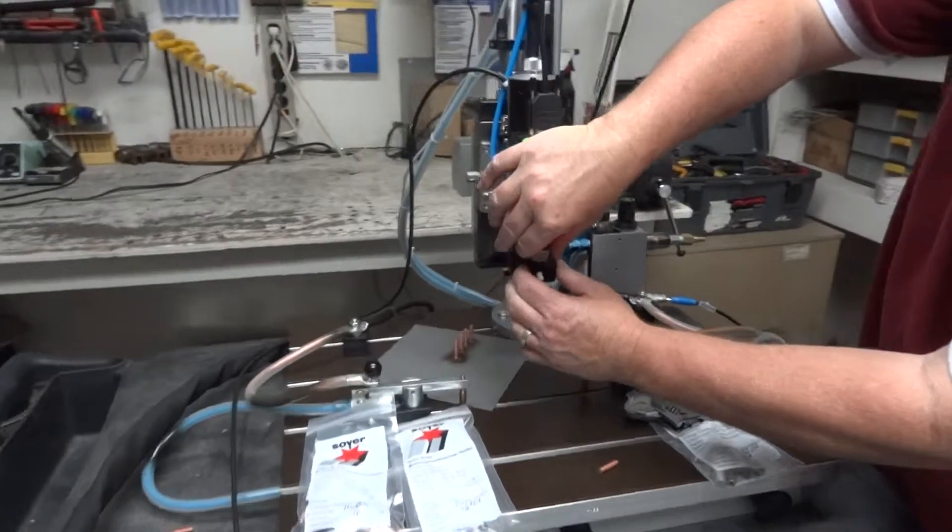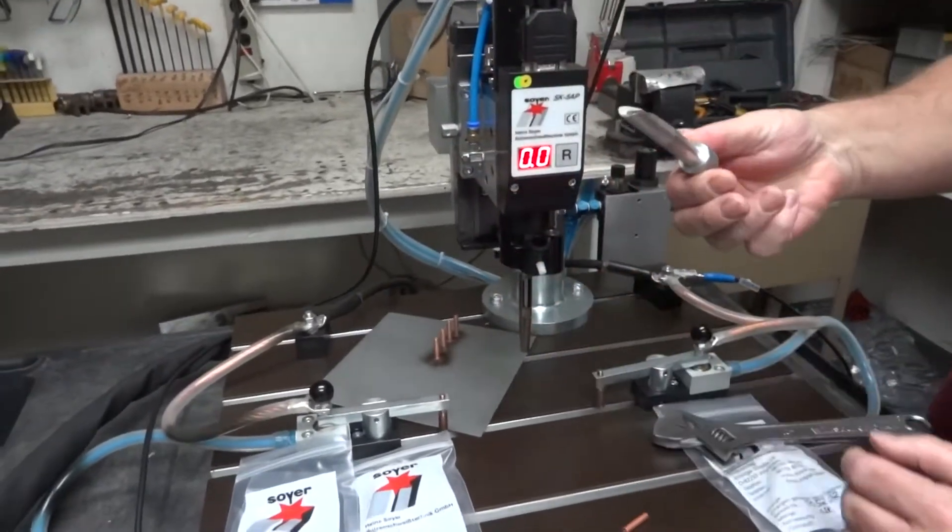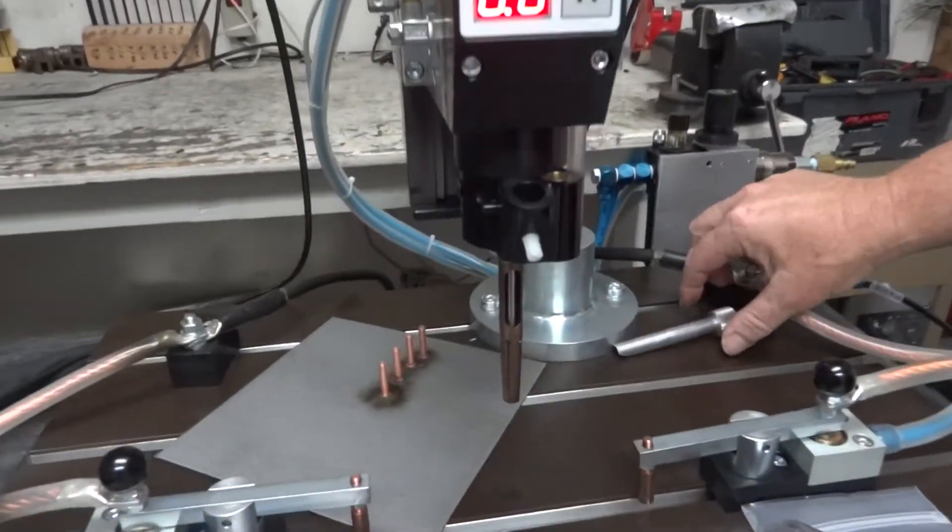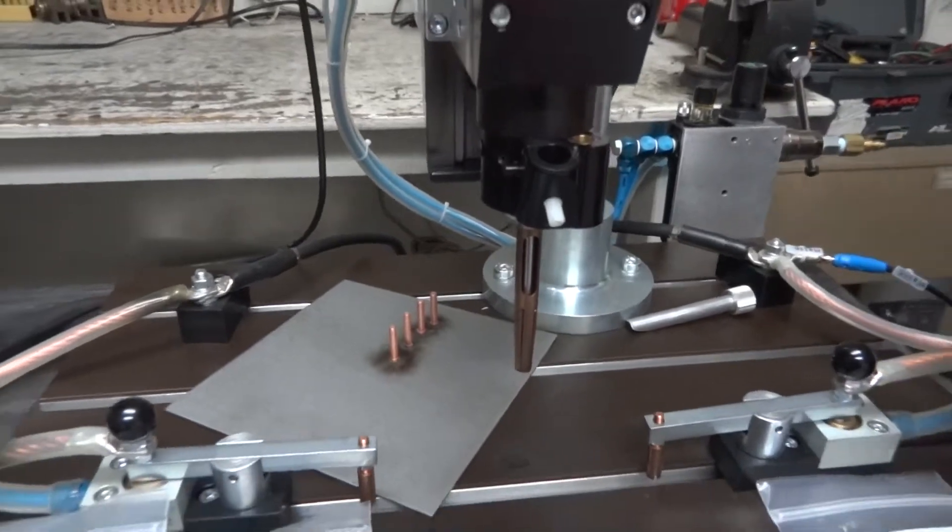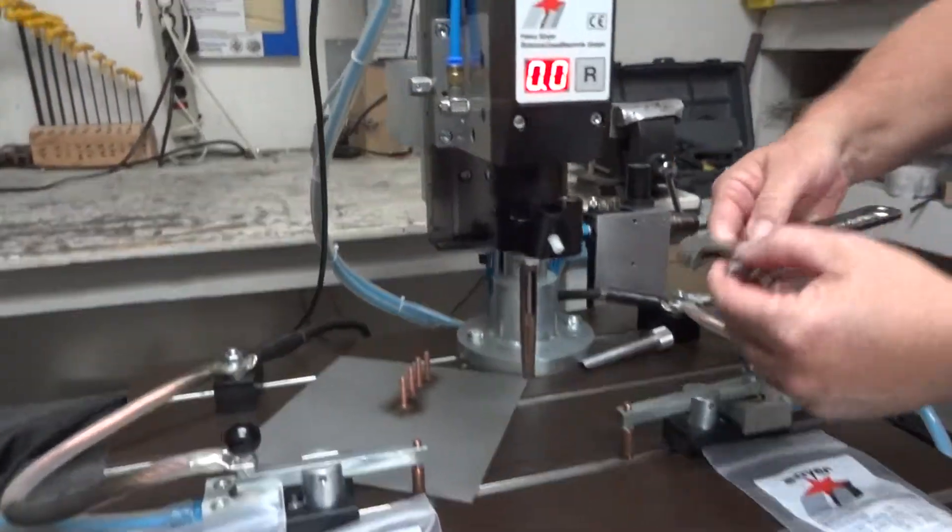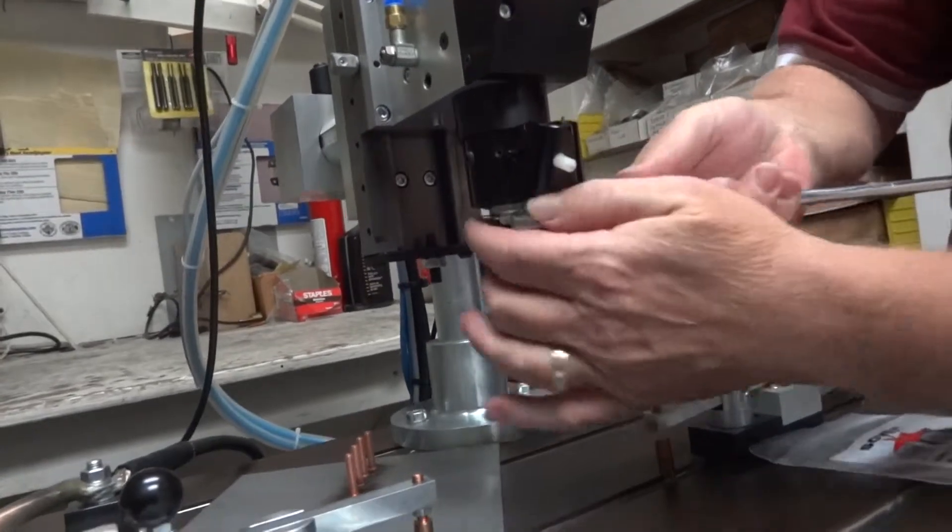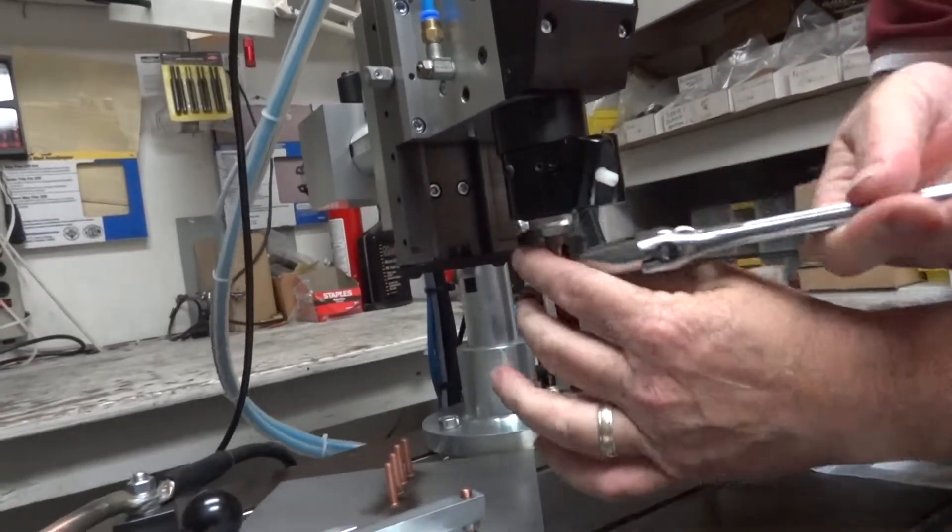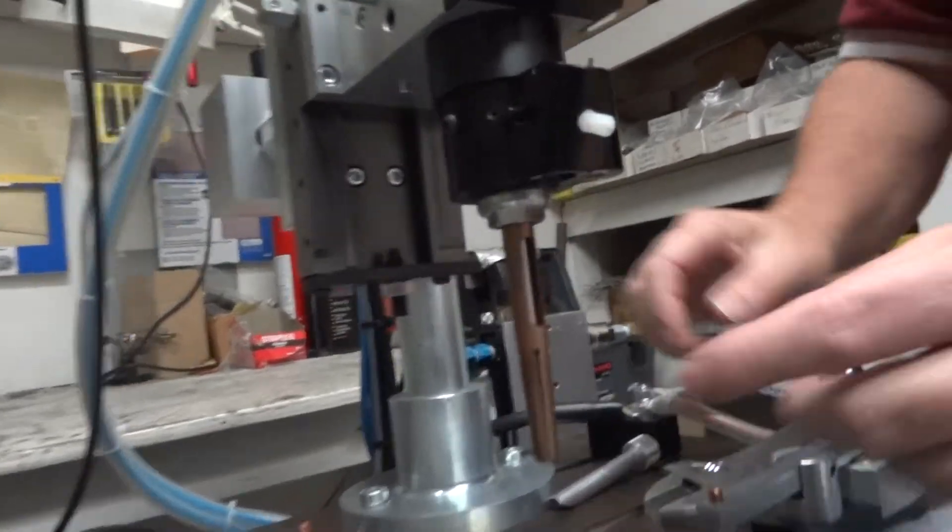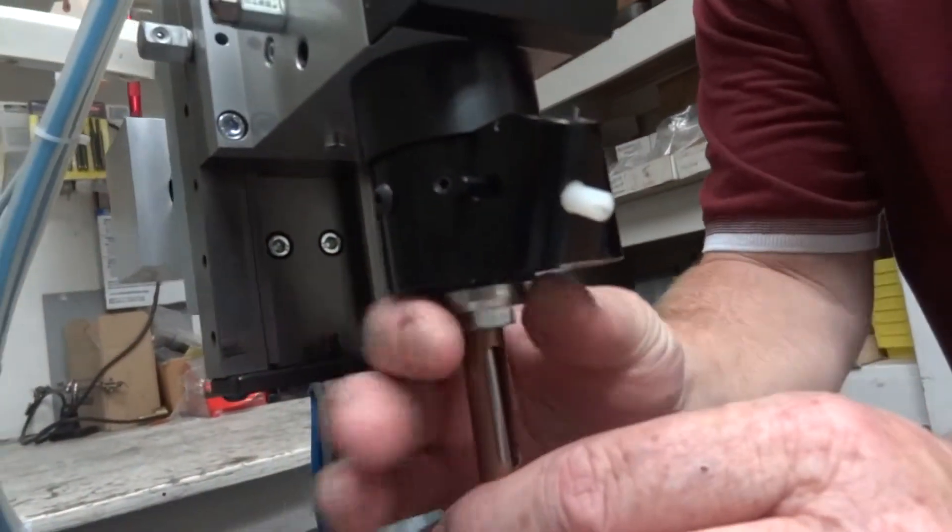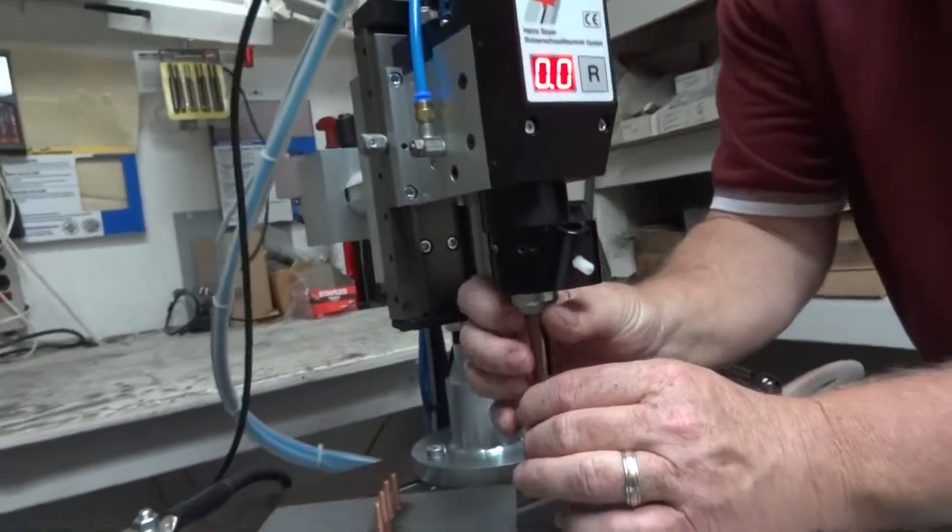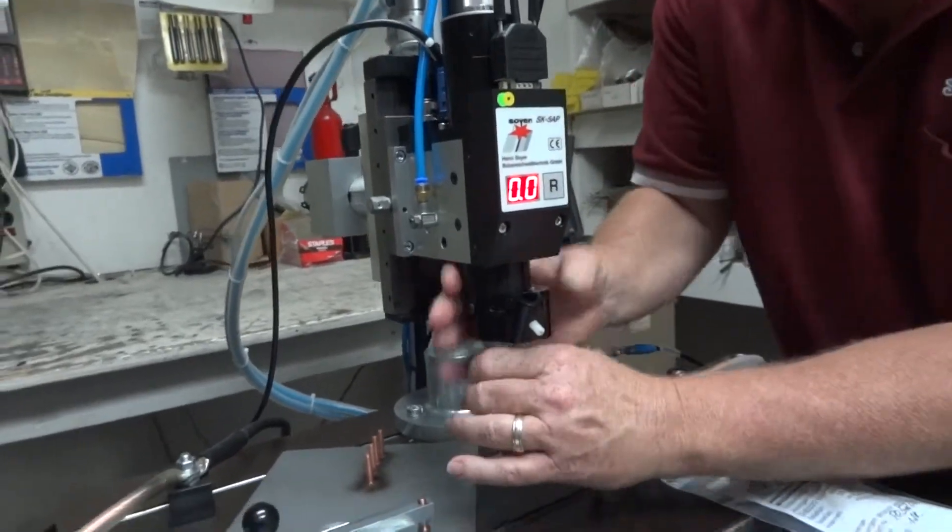And there's a little set screw on the front here that lets me pull this feed tube out. And there's a collet clamping nut underneath here that holds the collet in place. You never want to over tighten this nut. It just has to be not hand tight but a little bit more.